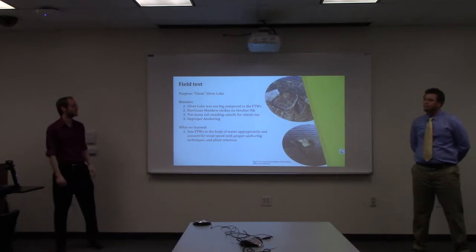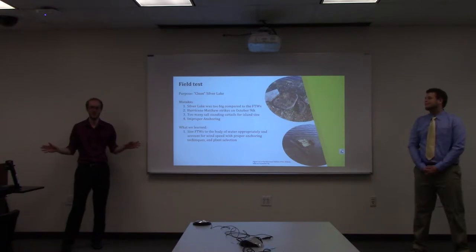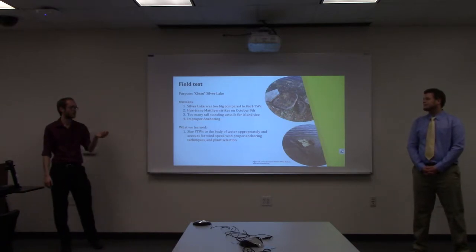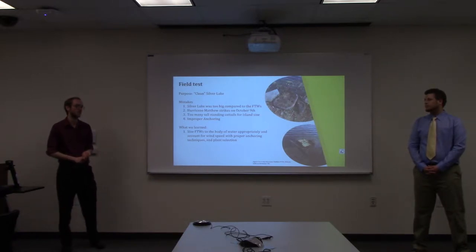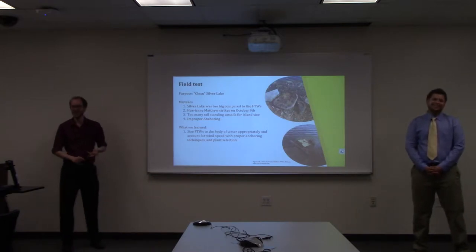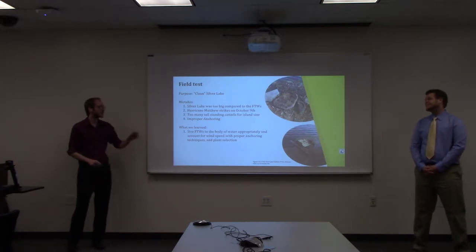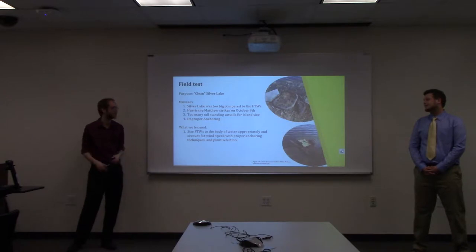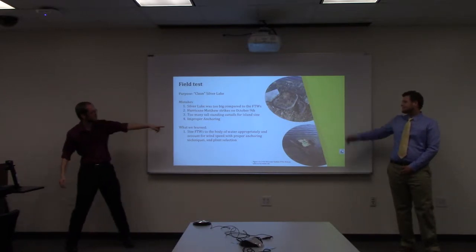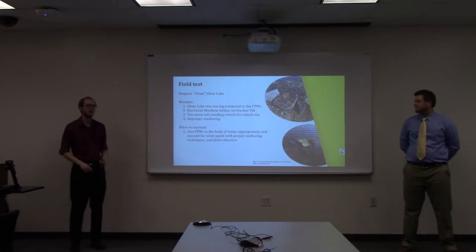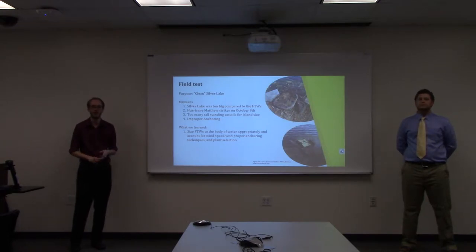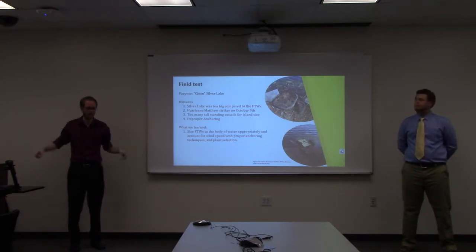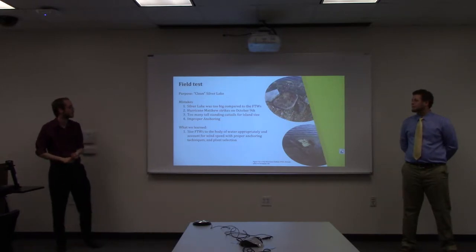We had a couple mistakes. Silver Lake is way too big. Floating Island International recommends about a one to five ratio island to lake. We were using one to two thousand, which was not very good. On October 9th, Hurricane Matthew came with 75 mile an hour winds and capsized them, completely destroyed it. That was due to tall standing cattails in the wind speeds and improper anchoring - we were just tethering straight to the shoreline.